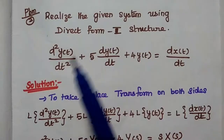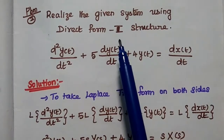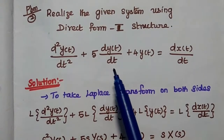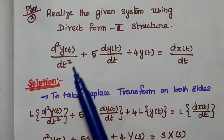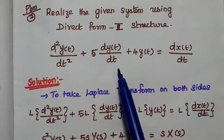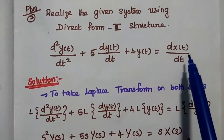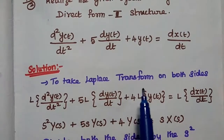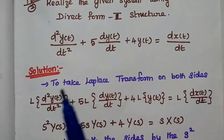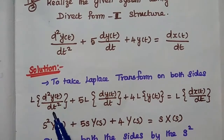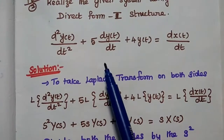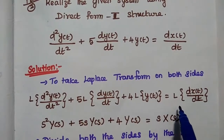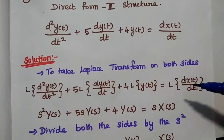The next problem is to realize the given system using direct form 1 structure. Here the system is given in terms of a differential equation: D squared Y of T by DT squared plus 5 DY of T by DT plus 4Y of T is equal to DX of T by DT. The first step in the solution is to take the Laplace transform on both sides.